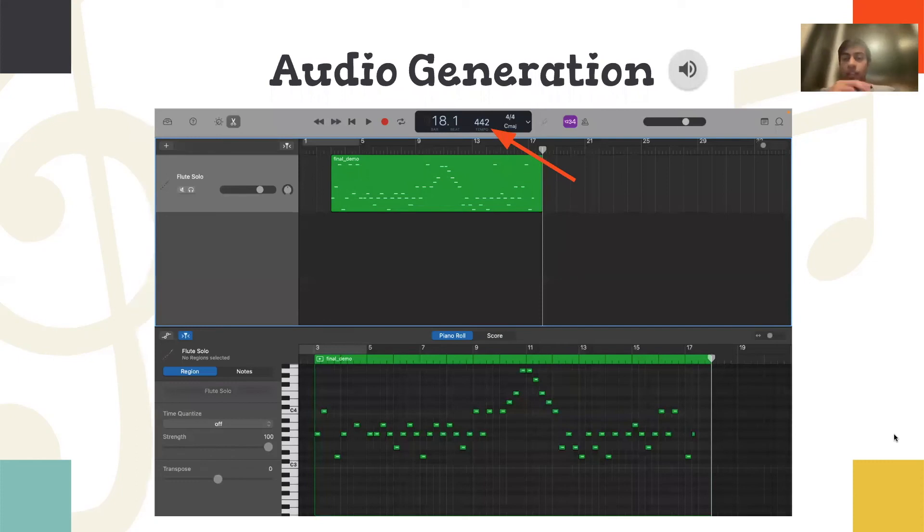So once we have the letter notes, we can convert them to their respective frequencies using a lookup table, and then store that in a MIDI file. And then we can open that in software such as GarageBand as shown. Now we can listen to a test audio.